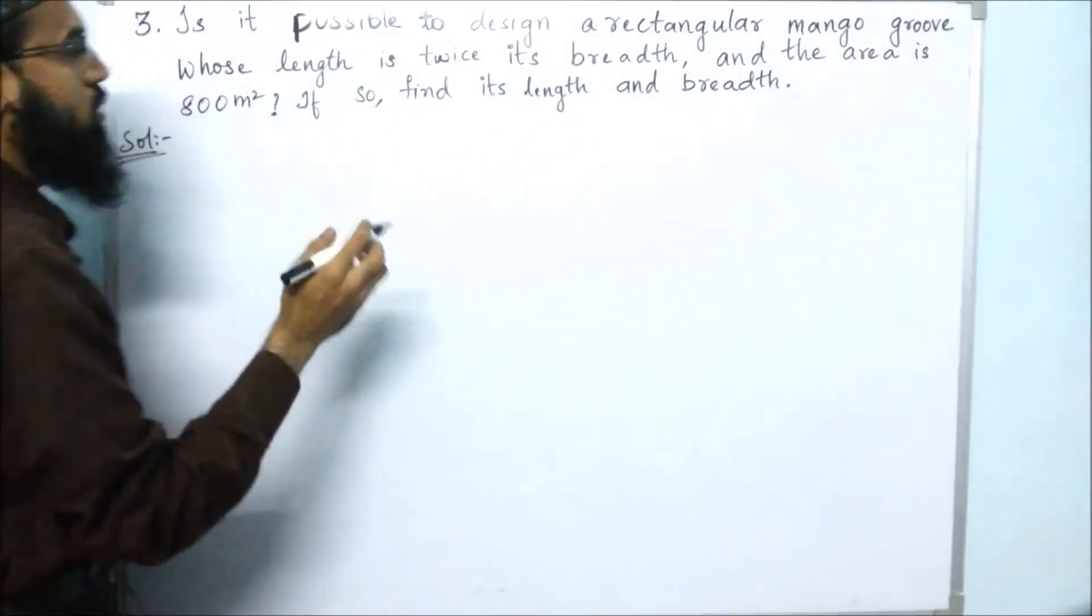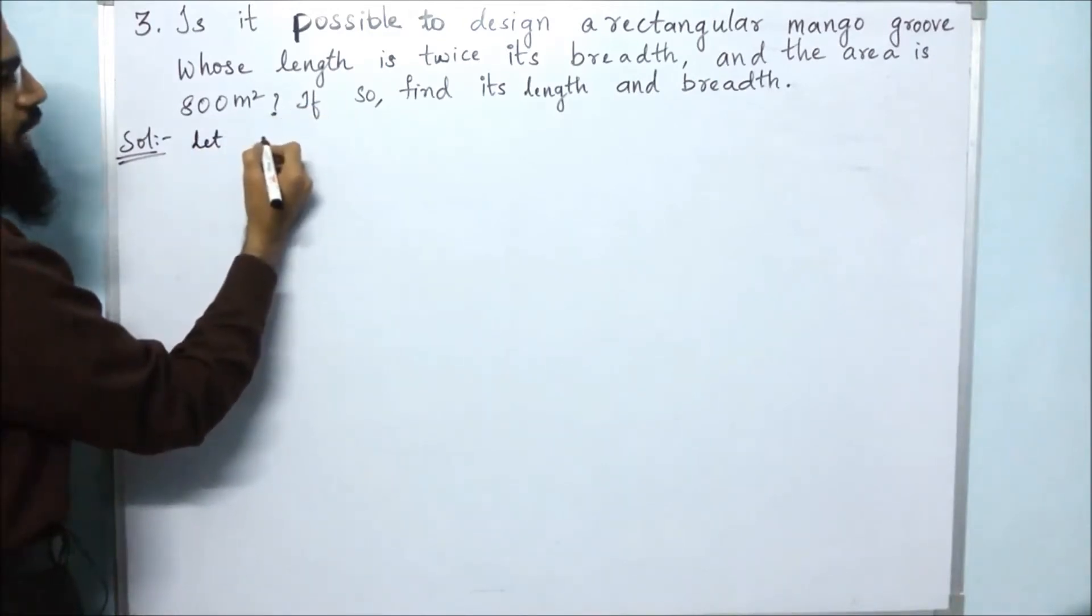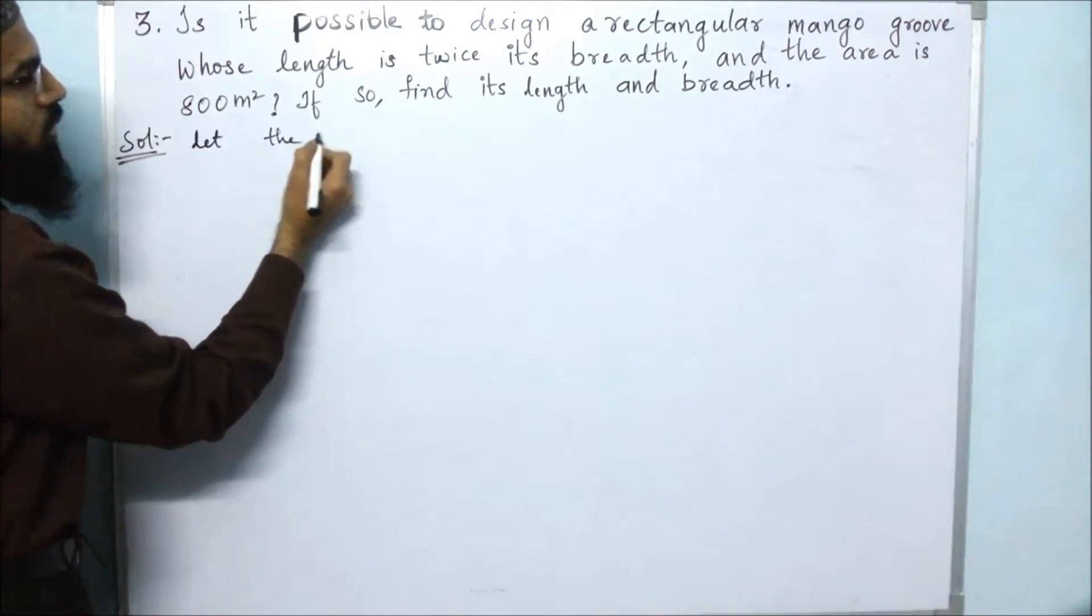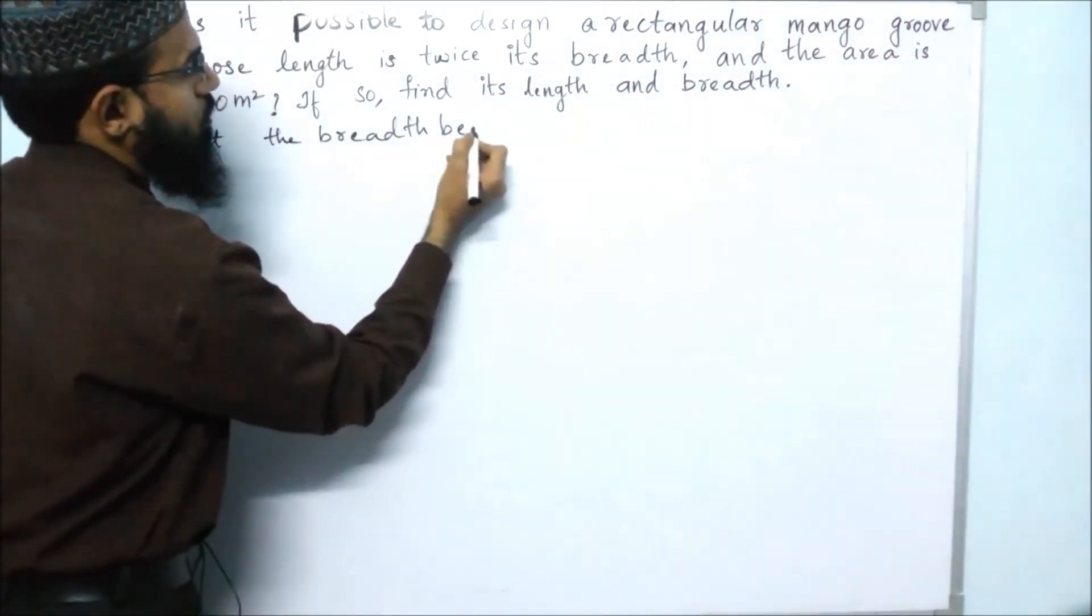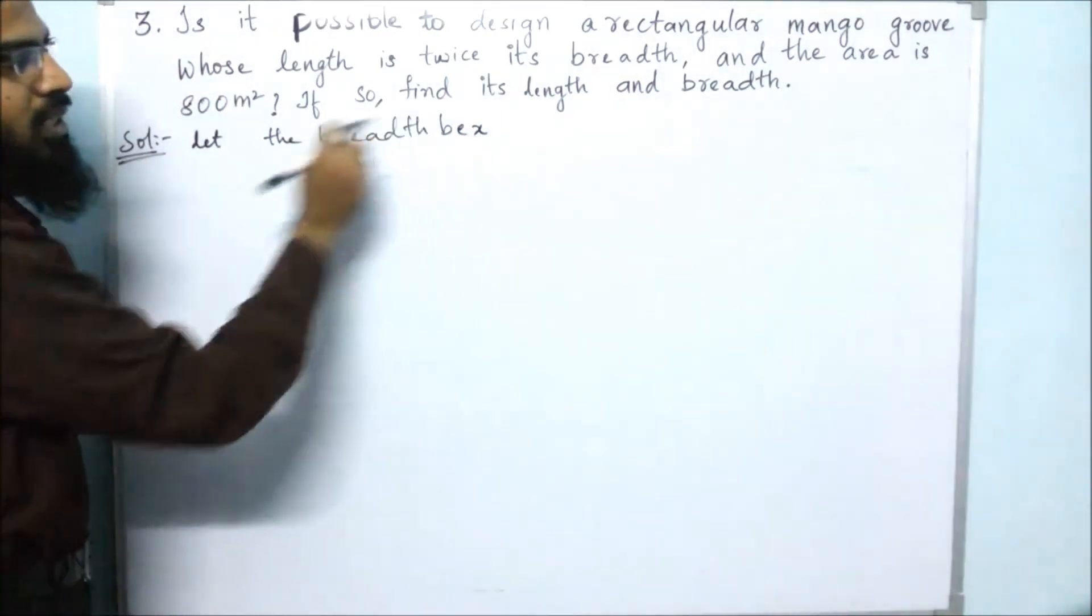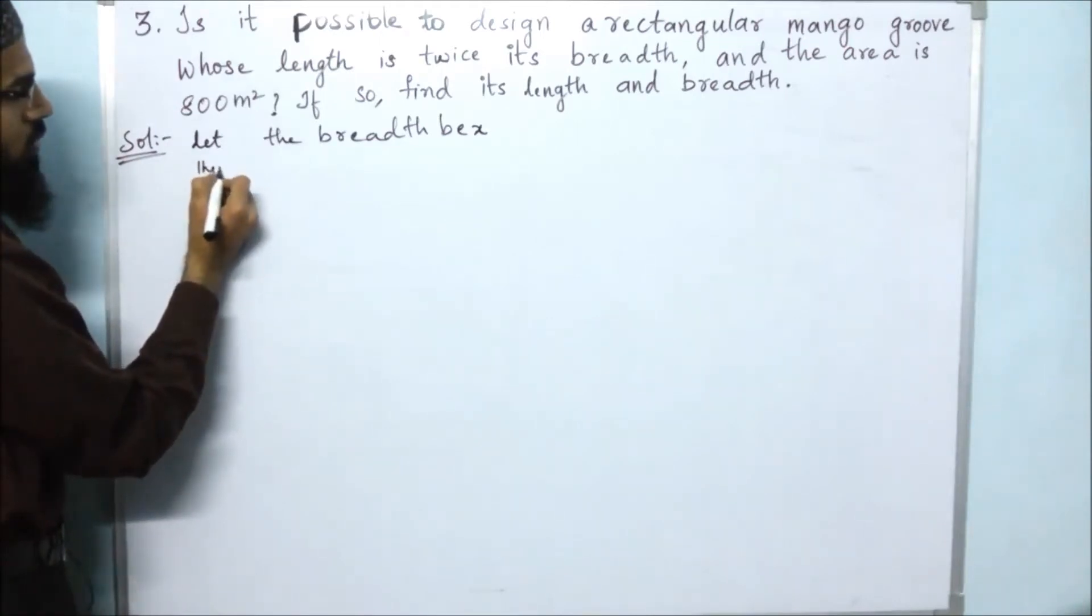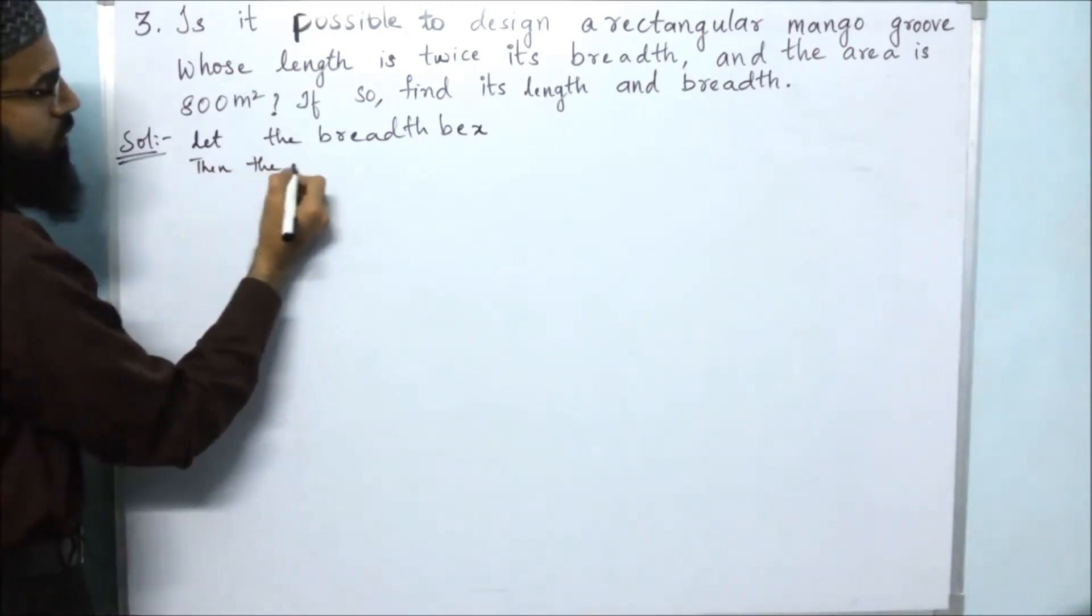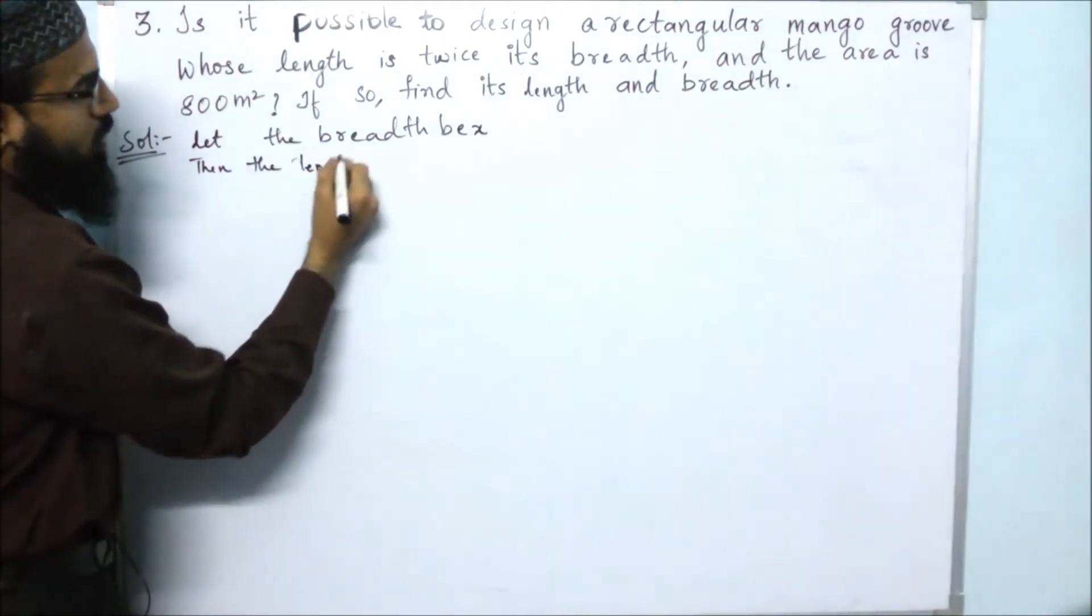We don't know the value of breadth, so we will take that as x. Let the breadth be x. If we twice this, we will get the length. Then the length equals 2x.